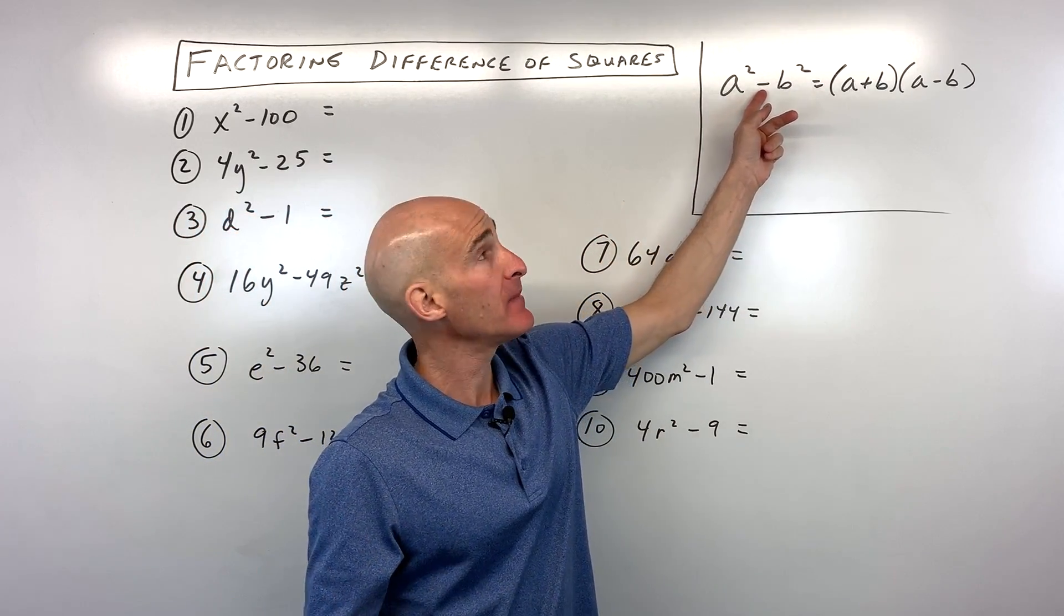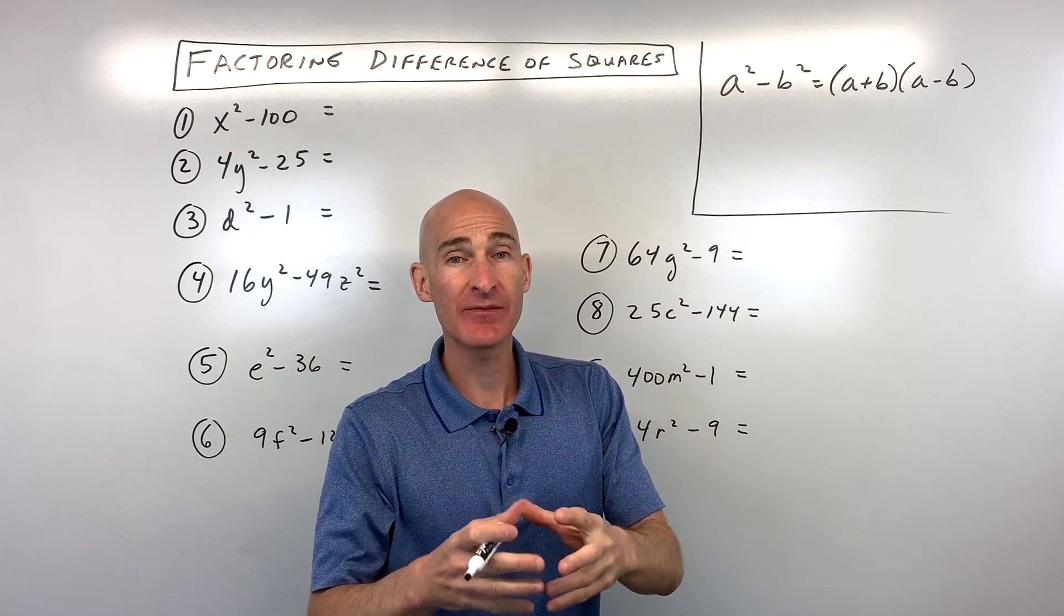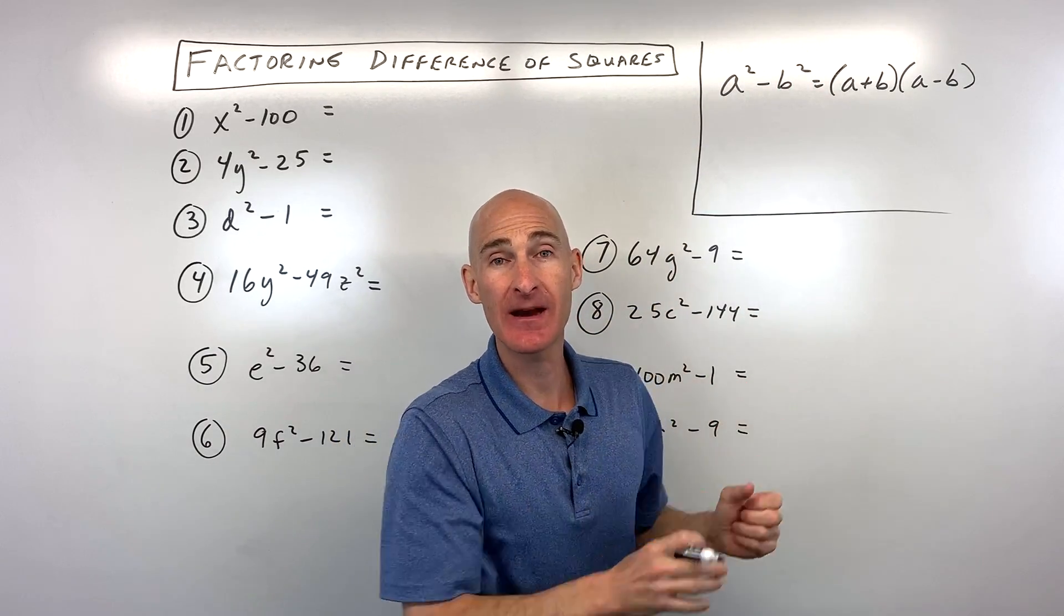So what exactly is a difference of two squares? Well, difference means you're subtracting, and you have a perfect square minus a perfect square, meaning something times itself minus something times itself.